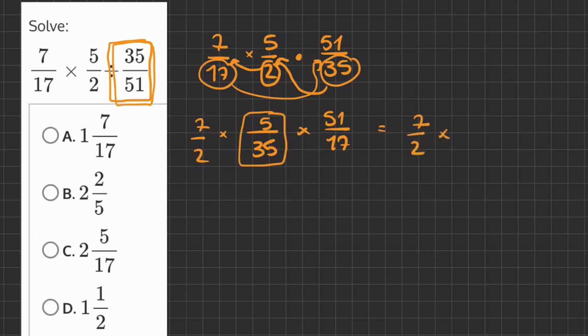And if we simplify this 5 over 35, we will get 1 over 7. And if we simplify this 51 over 17, we will get 3, because 17 goes into 51 3 times.